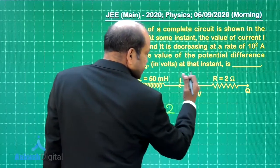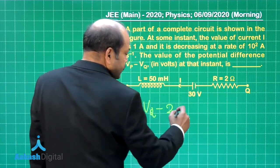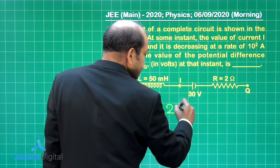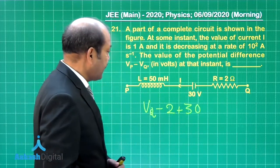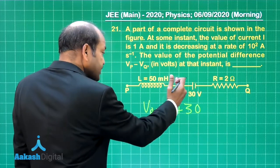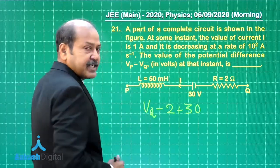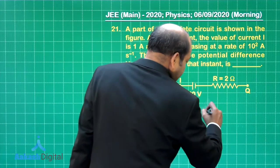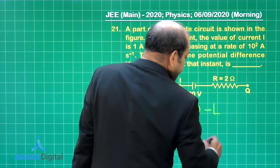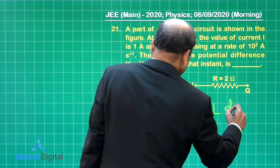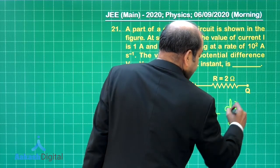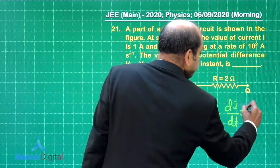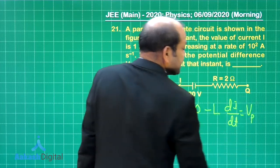Then we are going across the cell of emf 30 volt from the negative terminal to the positive terminal. So the next change is plus 30 and then what is the change as we go across the inductor? The change is minus l di by dt. So minus l di by dt that is the expression and then we have reached point p. So that means we have reached the potential of point p.